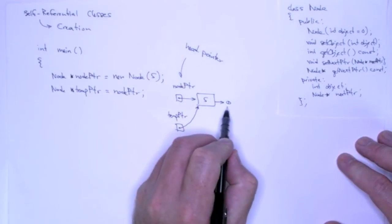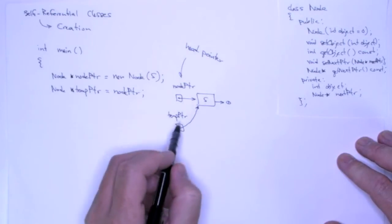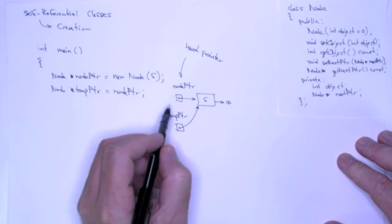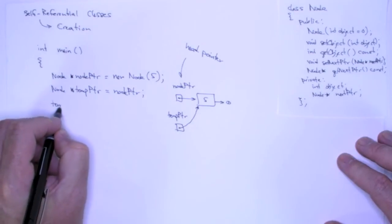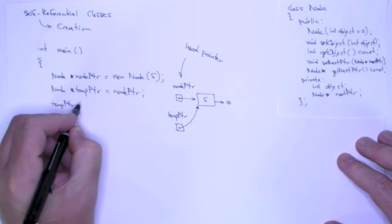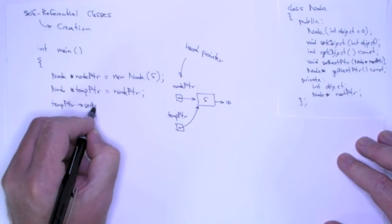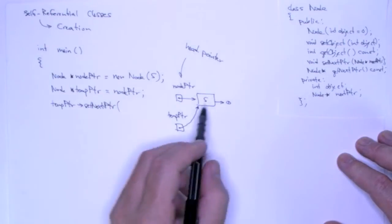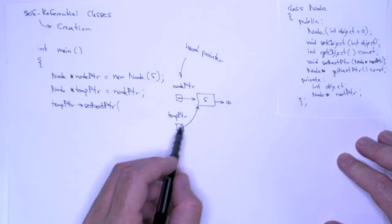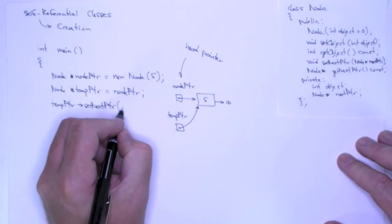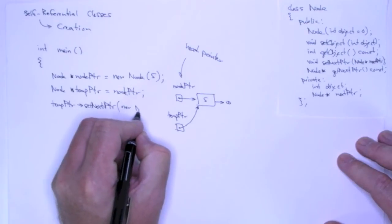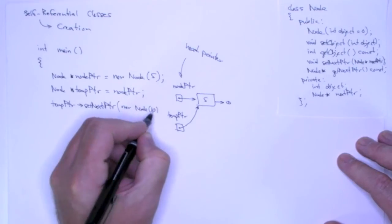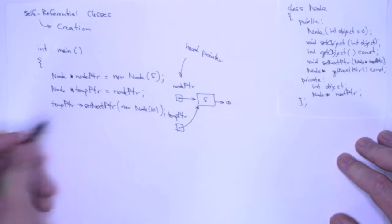So, I want to add another node on to the end, and I'm going to use temp pointer. I'm not going to use node pointer, so I can say temp pointer set next pointer. So, just like before, I'm calling the set next pointer on the node that temp pointer points to, which is 5, and I'm going to pass in new node 10, just like that.